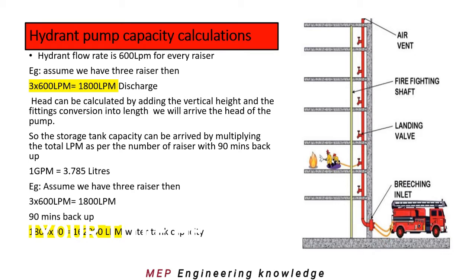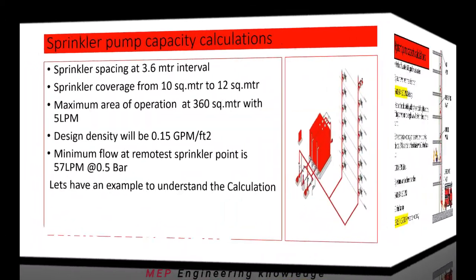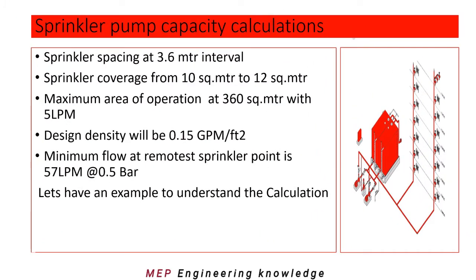The fittings can be arrived at by using the chart available for converting fittings into equivalent pipe length. The storage tank capacity can be arrived at by multiplying the total LPM as per the number of risers with 90 minutes backup. Note that 1 GPM is 3.785 liters. Assuming three risers: 3 into 600 LPM is 1800 LPM, and 90 minutes backup gives 1800 into 90 = 162,000 liters — that is the water tank capacity required.